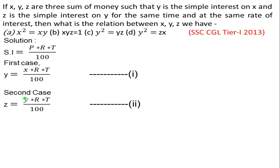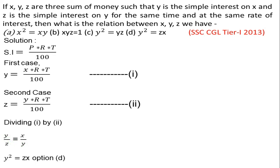अब हम दोनों equations को divide करते हैं ताकि RT/100 cancel हो जाए। First equation को second से divide करने पर: y/z = x/y। Cross multiplication से y² = zx आ जाएगा। यह option (d) है। तो answer है y² = zx।